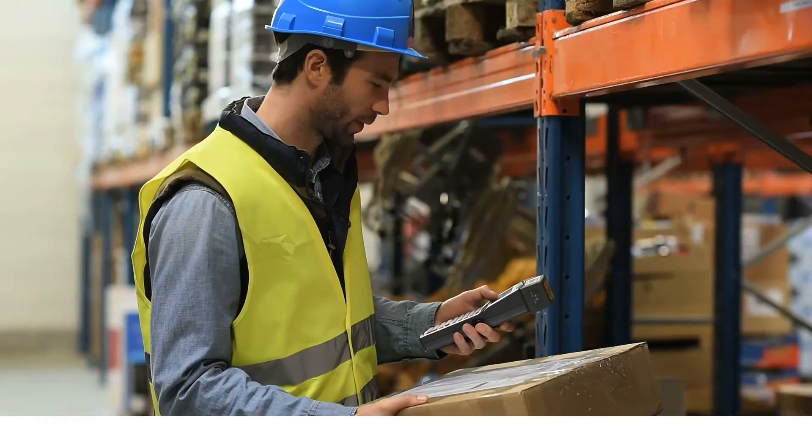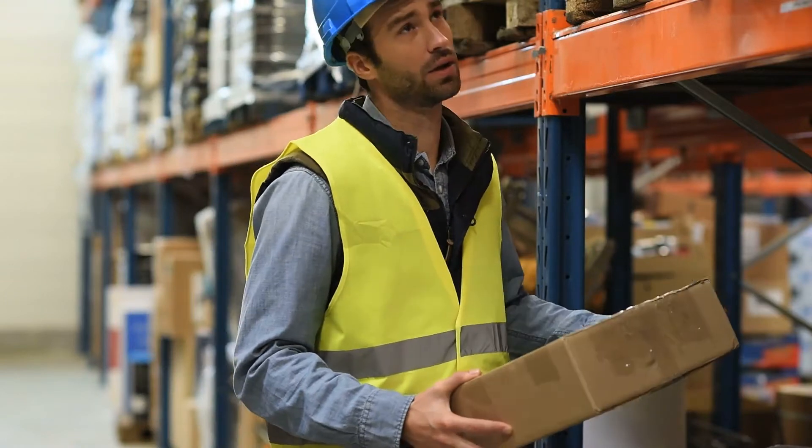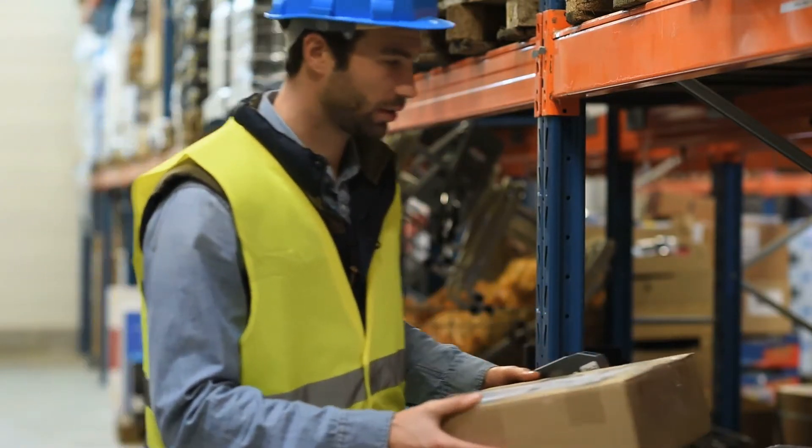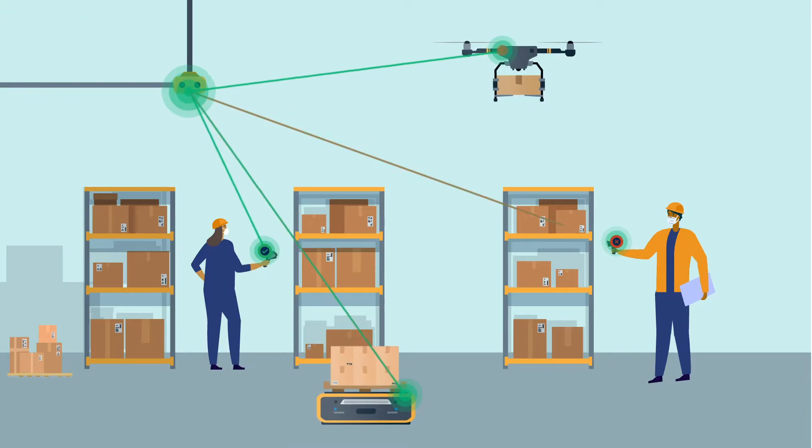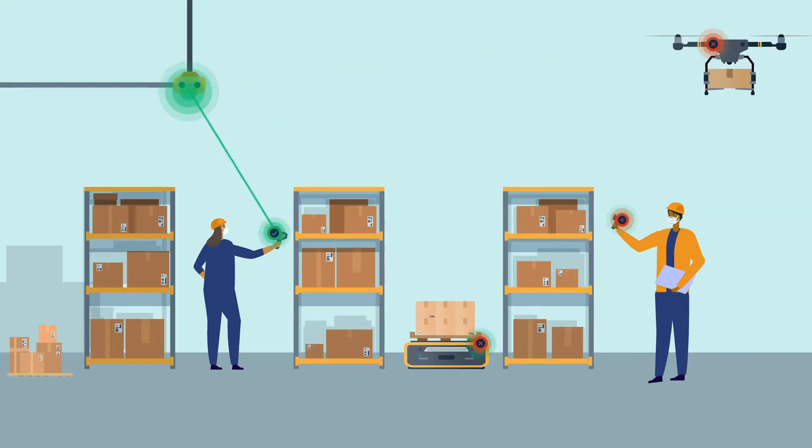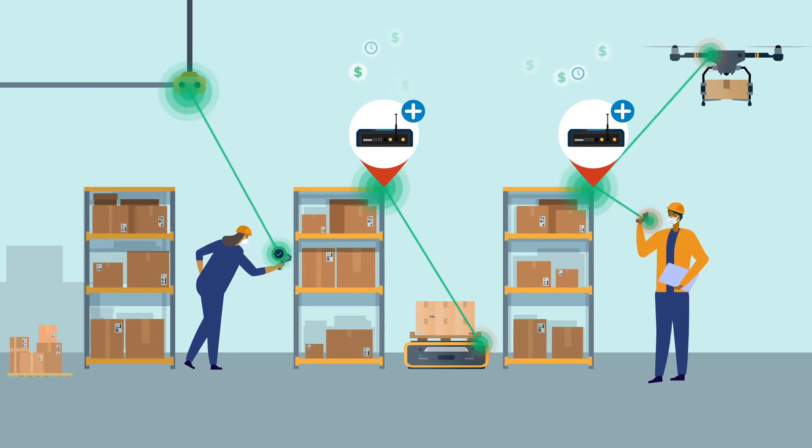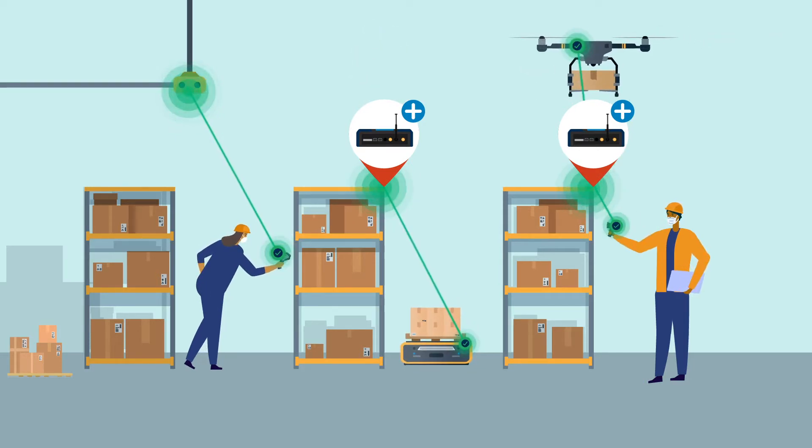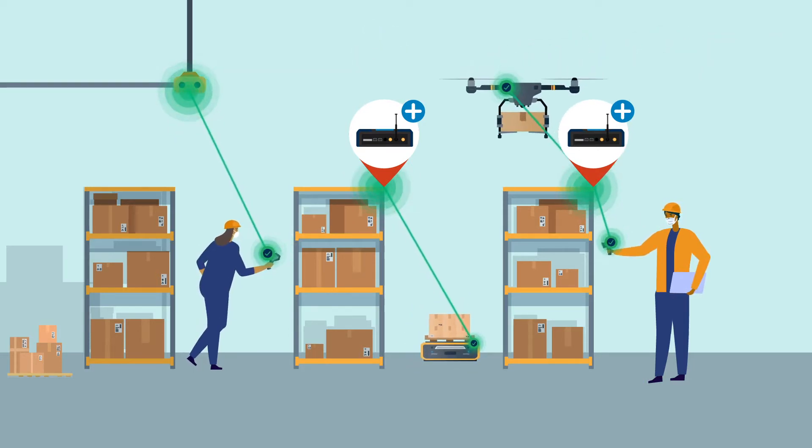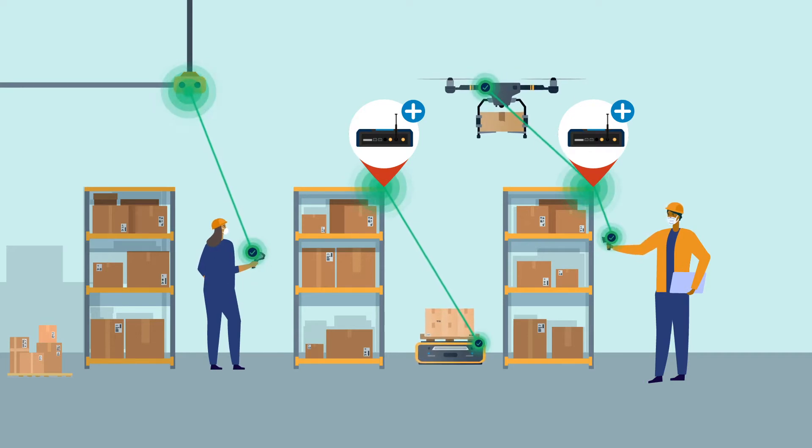Workers using handheld scanners and RFID wands also constantly traverse the warehouse, and extending coverage to those devices can be difficult in the face of interference. Adding more costly network infrastructure is the only way to overcome signal blockage issues to keep device-equipped personnel and mobile robots connected between the racks.